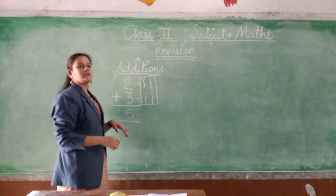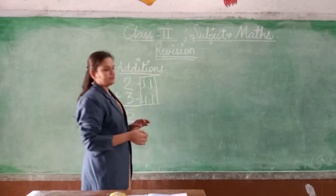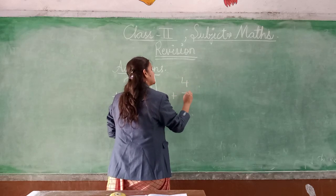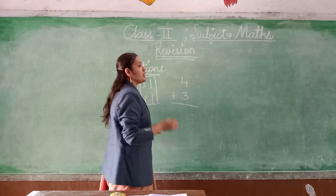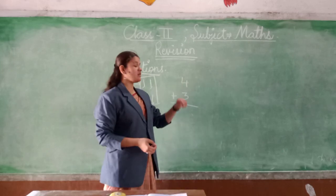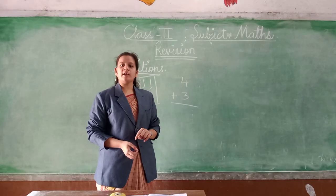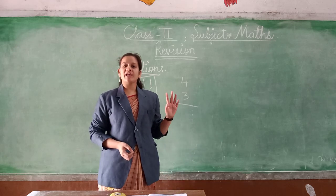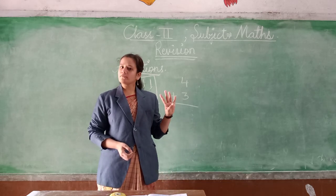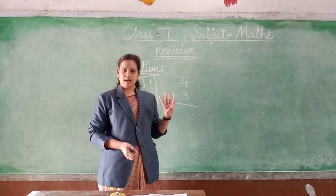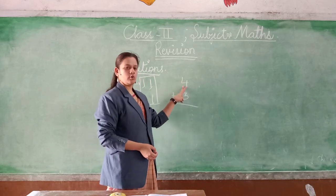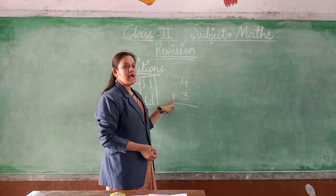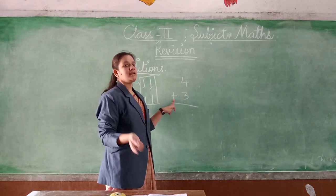Similarly, last year we had done it on our fingers also. So when we will do 4 plus 3, we will count with our fingers. What is the first number here? 4. So open your 4 fingers of your left hand. The left hand has 4 fingers. Done. Now with this 4, we also have to open the second number because addition means adding something.